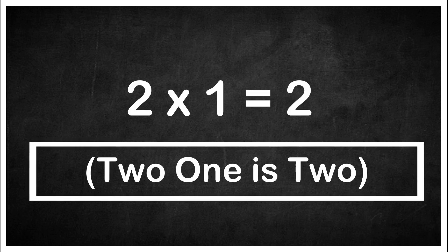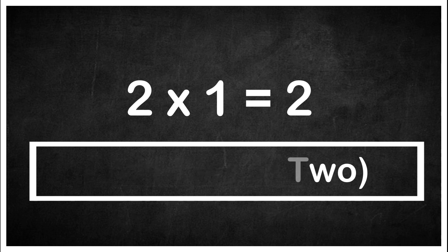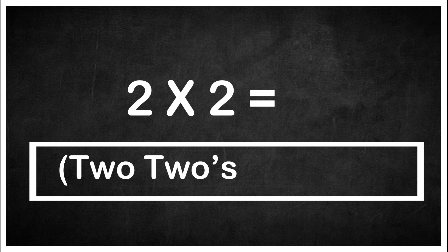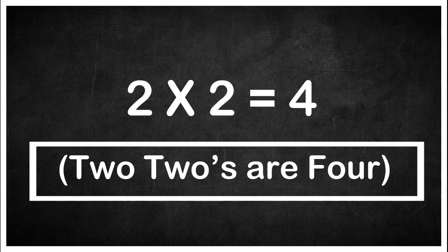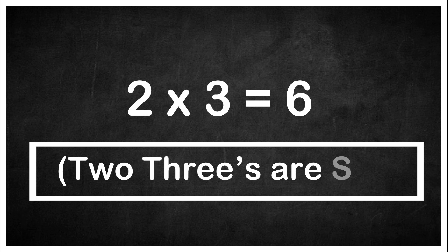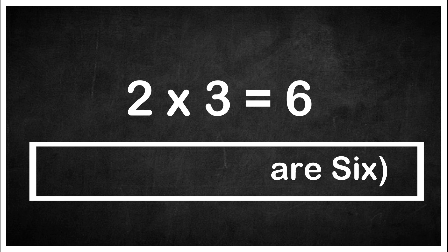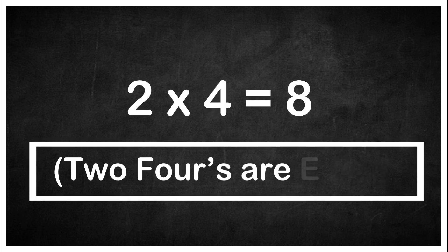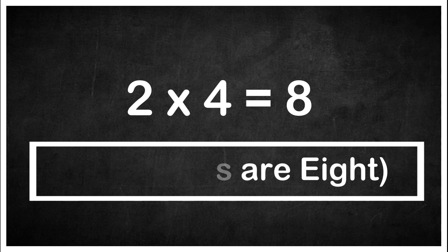Two one is two. Two twos are four. Two threes are six. Two fours are eight. Two fives are ten.